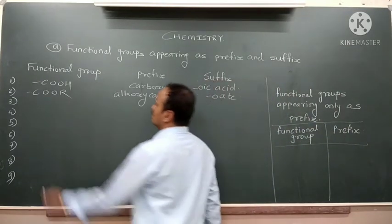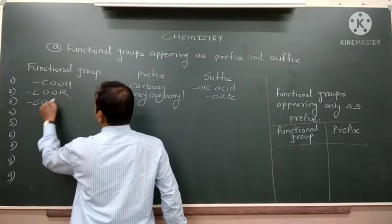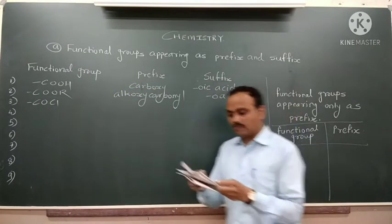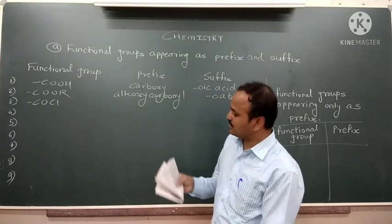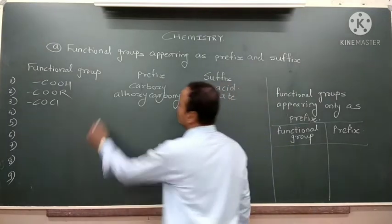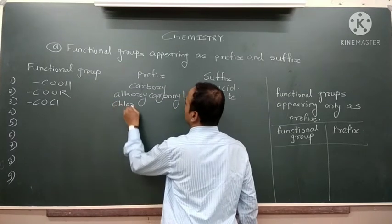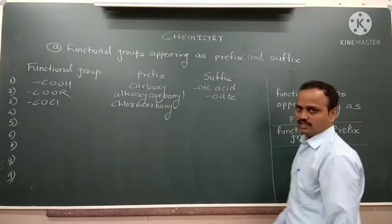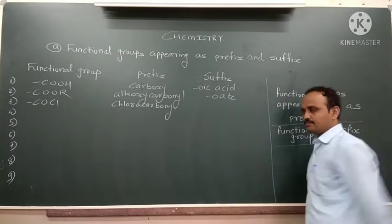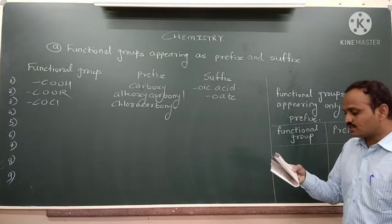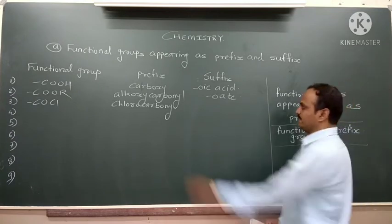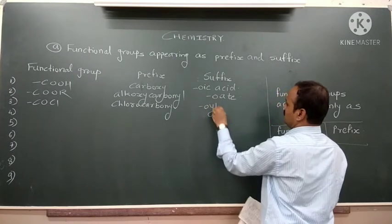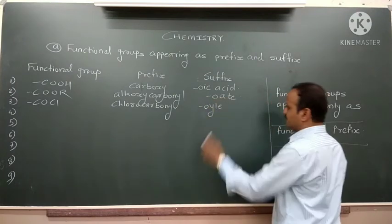The third functional group is –COCl, the acyl chloride functional group. When written as a prefix, its name is 'chlorocarbonyl'. When it acts as a parent functional group, its suffix is '-oyl chloride'.